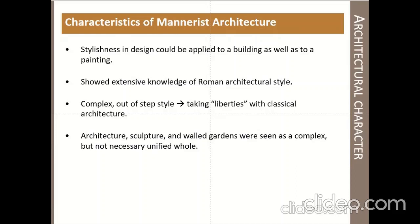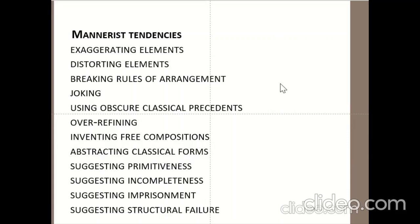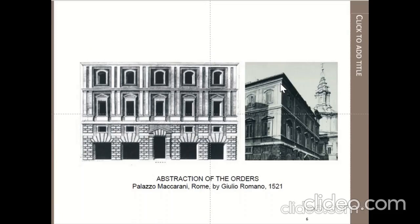Mannerist characteristics include exaggerating elements, distorting elements, breaking rules of arrangement, joking, using obscure classical precedents, over-refining, inventing free composition, abstracting classical forms, suggesting primitiveness, suggesting incompleteness, suggesting imprisonment, and suggesting structural failure. All elements were used in a very unusual, joking, and unique way by the architects.